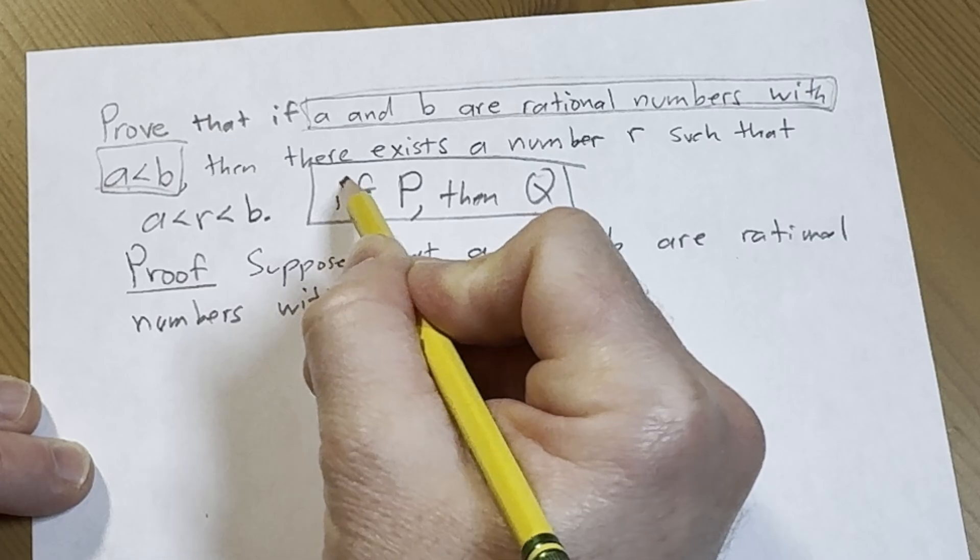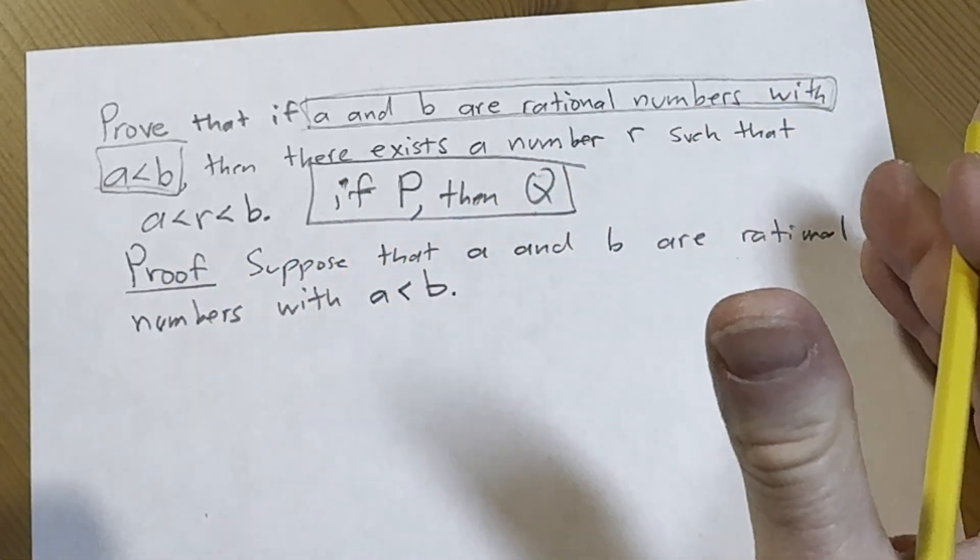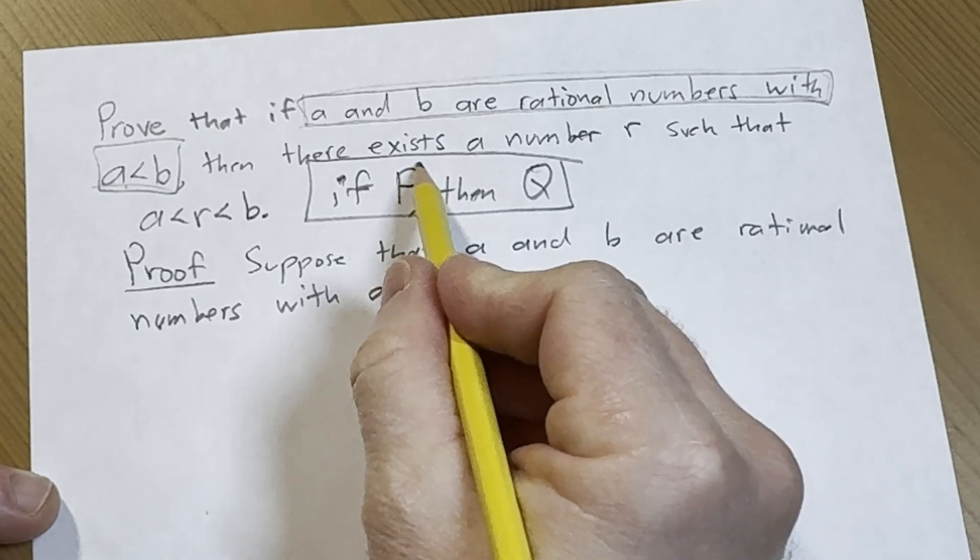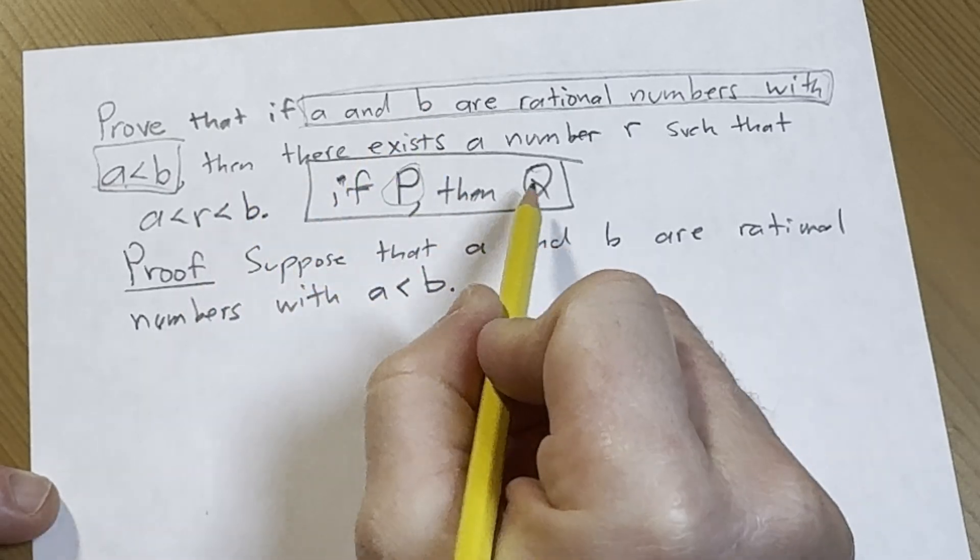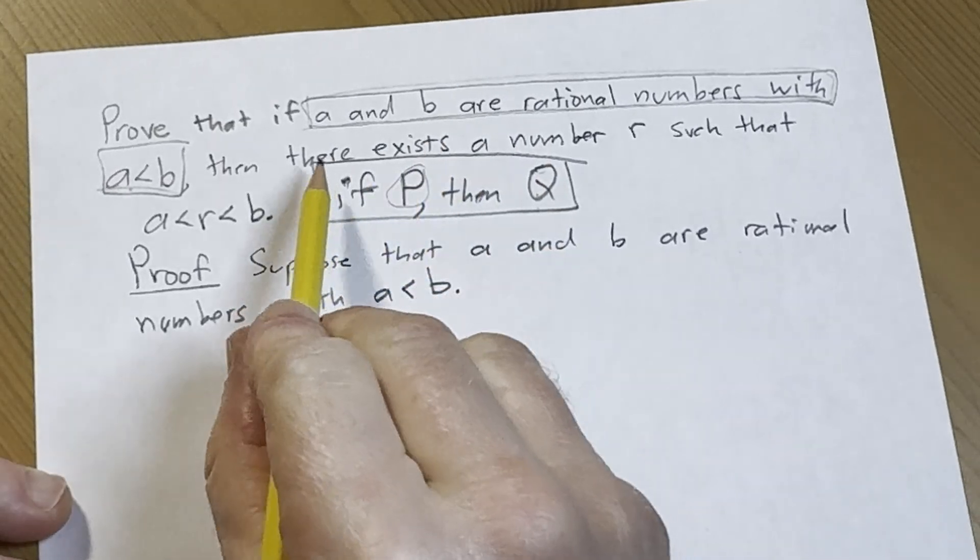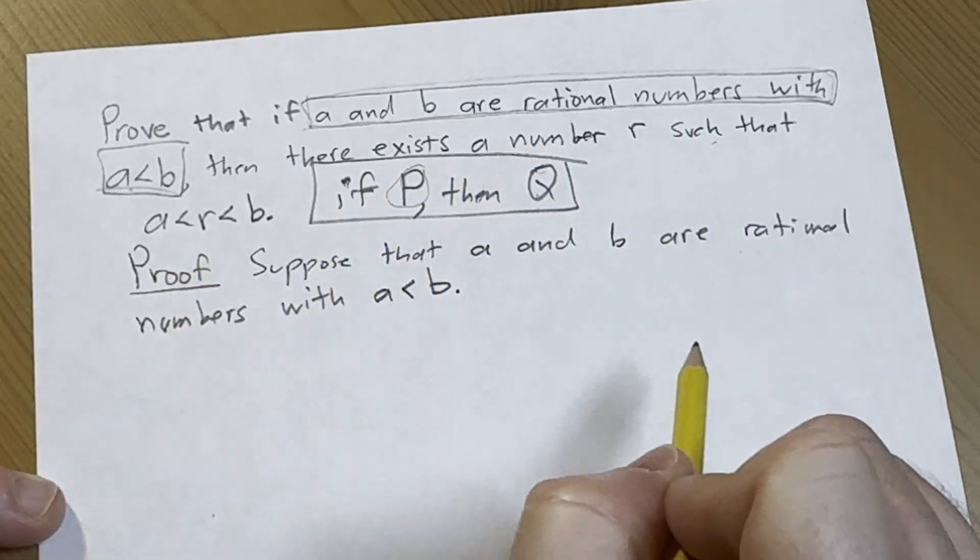And to prove a mathematical proposition or statement, to prove it's true, in this form what you do is you assume p is true, which we've done here, and now we have to show that q is true. So to show that there exists a number r such that r is there.